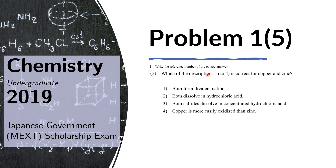Problem 1.5: Which of the descriptions 1 to 4 is correct for copper and zinc? Looking at the choices from one to four, we notice that choice one is already correct: both form divalent cations, meaning a plus-two charge. We know that copper has a plus-two and zinc has a plus-two oxidation state, so choice one is the correct answer.